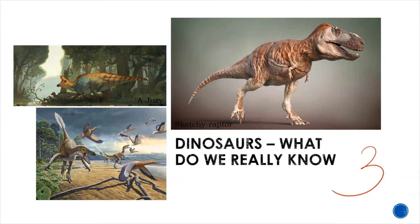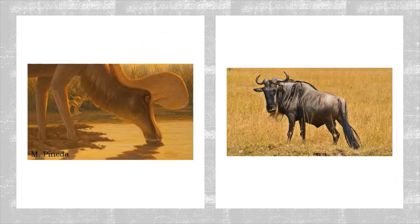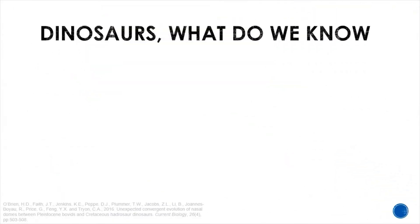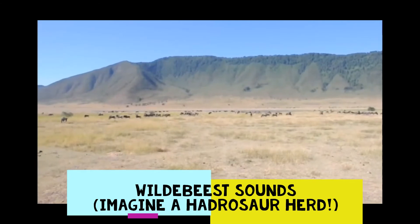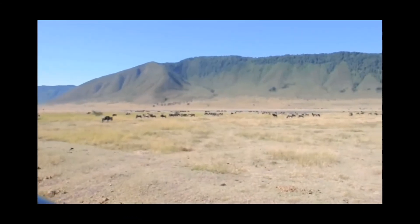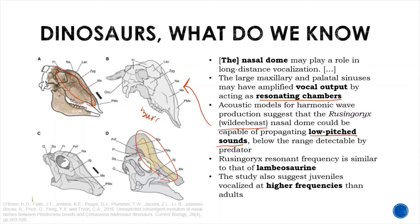O'Brien in 2016 compared the skulls of a wildebeest and a hadrosaur dinosaur to see similarities in vocalization. The study said the nasal dome may play a role in long-distance vocalization. The large maxillary and palatal sinuses — the holes associated with the nose — may have amplified vocal output, acting as resonating chambers. Acoustic models for harmonic wave production suggest that the wildebeest nasal dome could be capable of propagating low-pitched sounds below the range detectable by predators. The wildebeest's resonant frequency is similar to that of a juvenile hadrosaur. The study also suggests juveniles vocalize at higher frequencies than adults.